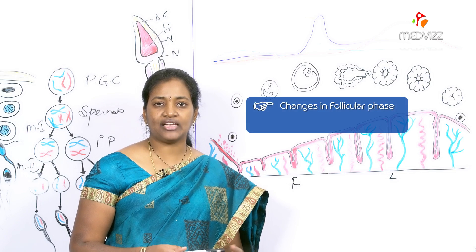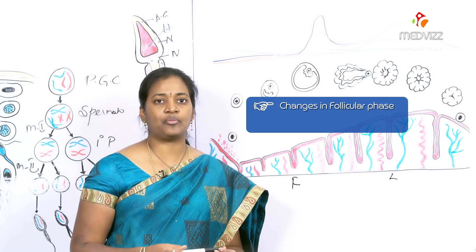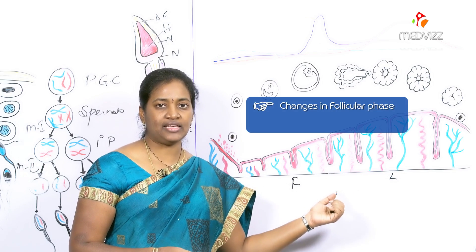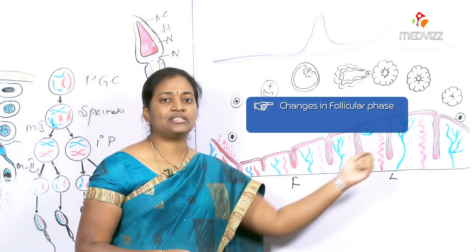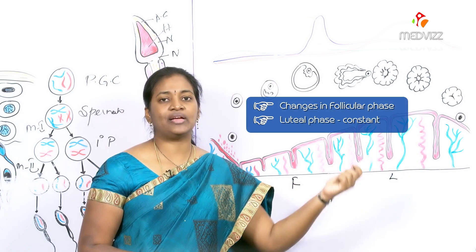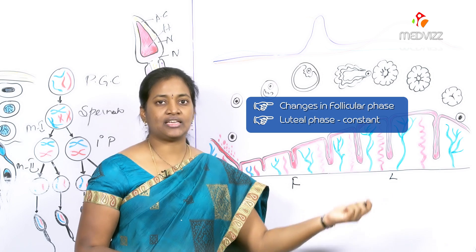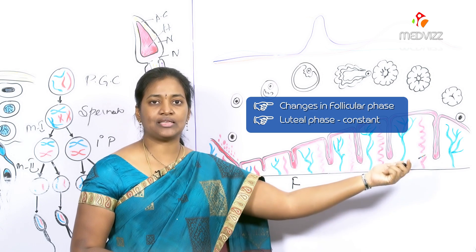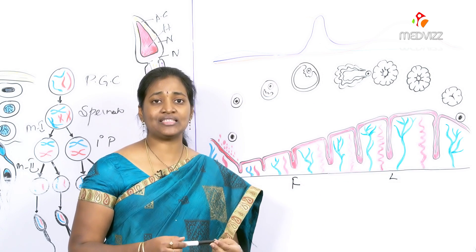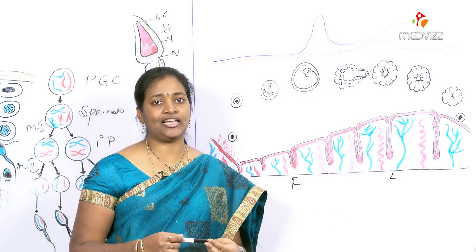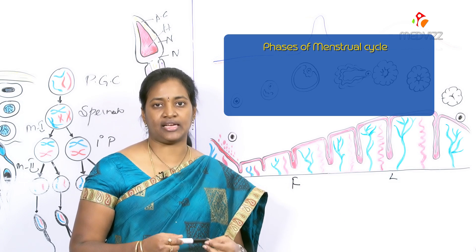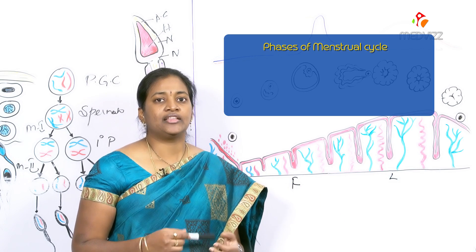Changes in the intermenstrual interval are primarily due to changes in the follicular phase, because the luteal phase always remains constant, and that depends upon the progesterone hormone. We will now discuss in detail all the phases of the menstrual cycle.